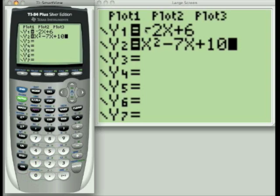Now, this first equation is a linear equation, so my graph will be a line. The second equation that I have entered in here is a quadratic equation, and my graph will be a parabola. So let's see what the graphing screen has to show us.